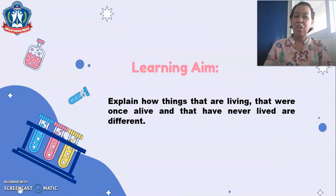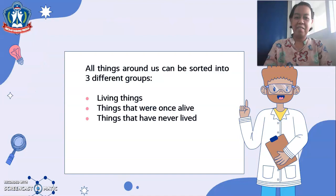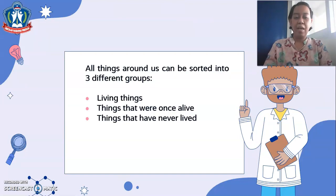Our learning aim is to explain how things that are living, that were once alive, and that have never lived, are different. All things around us can be sorted into three different groups: living things, things that were once alive, and things that have never lived.